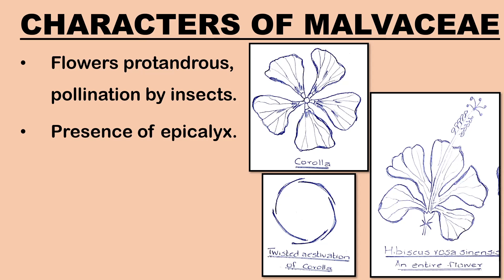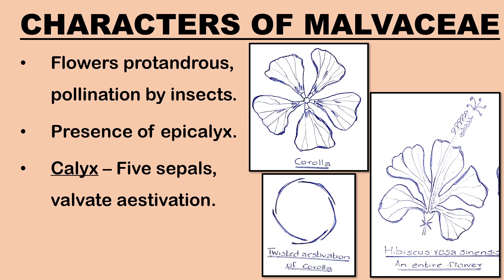The flower shows the presence of an epicalyx, which is a whorl of bracteoles developing at the base of the calyx. Calyx consists of five sepals which are green in color. They may be free or united at the base. The aestivation, or mode of arrangement of the sepals, is valvate — that is, the members of the whorl are in contact with each other by their margins or lie very close to each other but do not overlap.